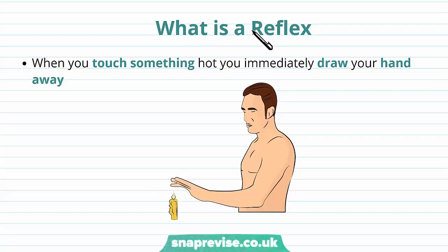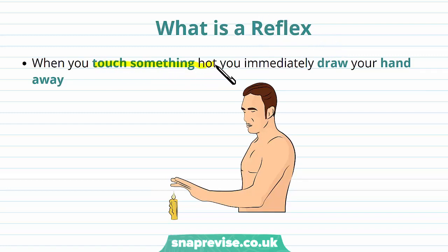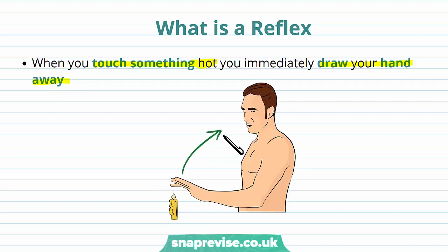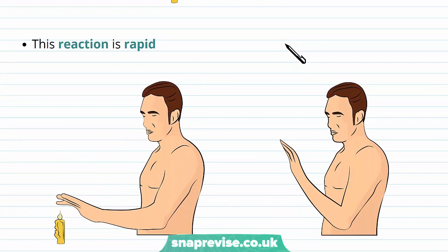So what do we mean by a reflex? It's quite a common term used in describing nervous systems, but we need to go through what it is in detail. When you touch something very hot, for example like a candle or a hot saucepan on the cooker, you immediately draw your hand away without really thinking about it. This kind of response is what we call a reflex. The reaction is very rapid, happening in less than one second.